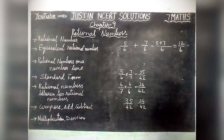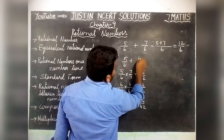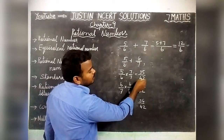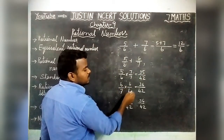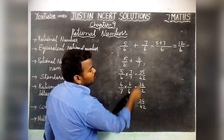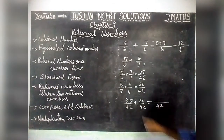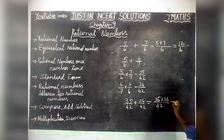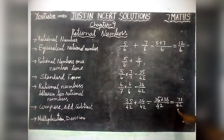If denominators are different — for example 5 by 6 plus 6 by 7 — we first convert to equivalent fractions. 5 by 6 multiplied by 7 by 7 gives 35 by 42, and 6 by 7 multiplied by 6 by 6 gives 36 by 42. Now denominators are the same. Common denominator 42, and 35 plus 36 equals 71. So the answer is 71 by 42.